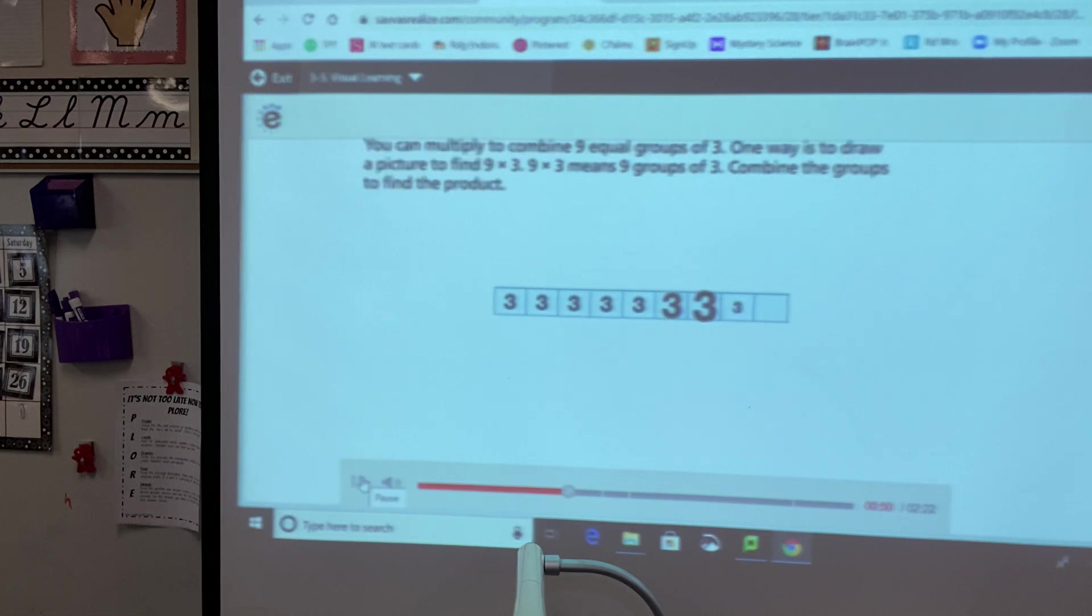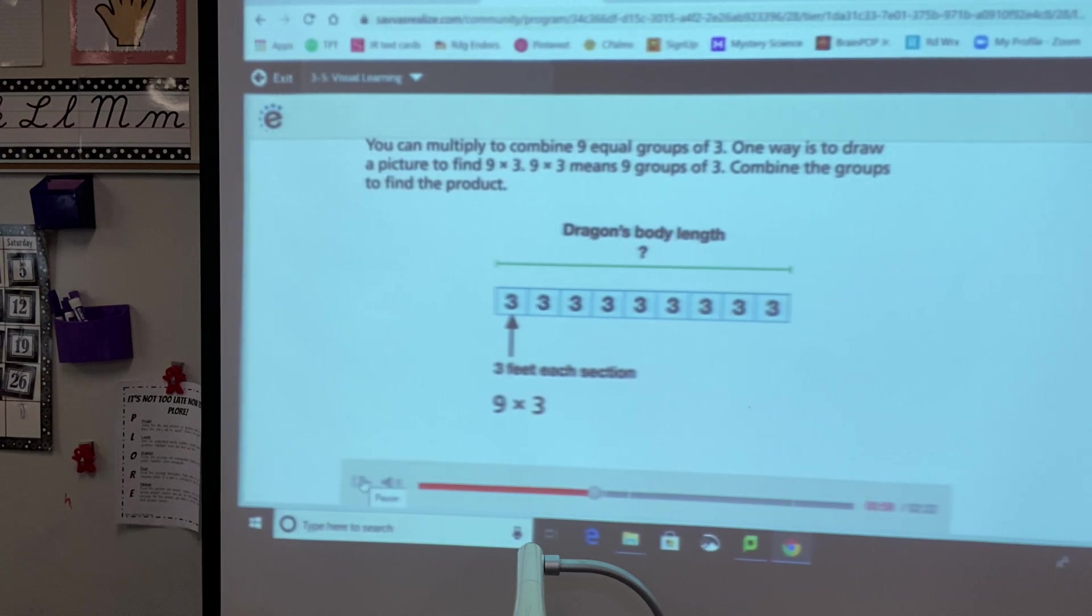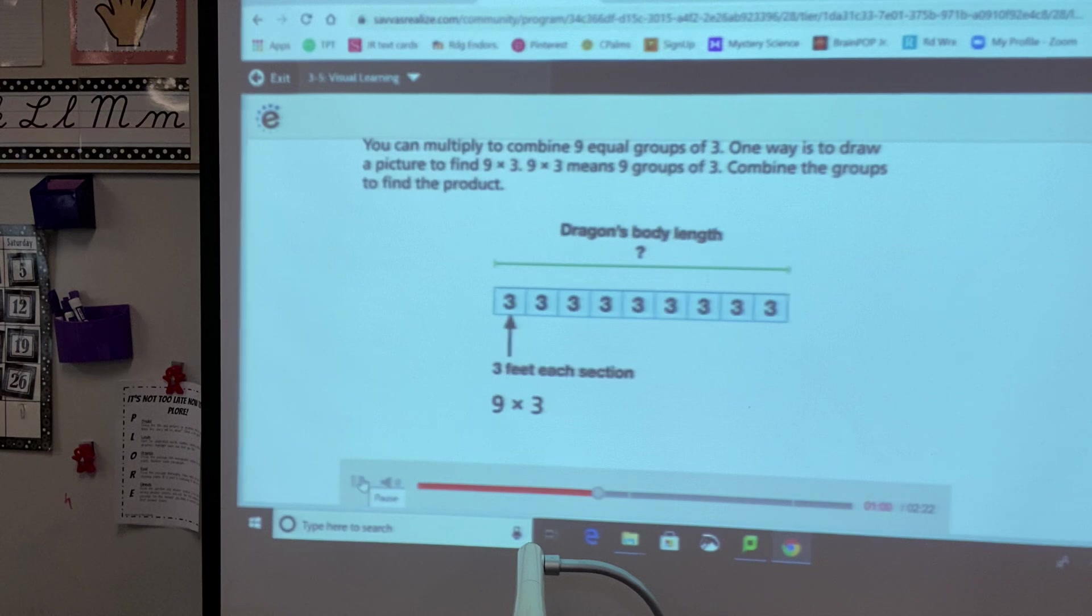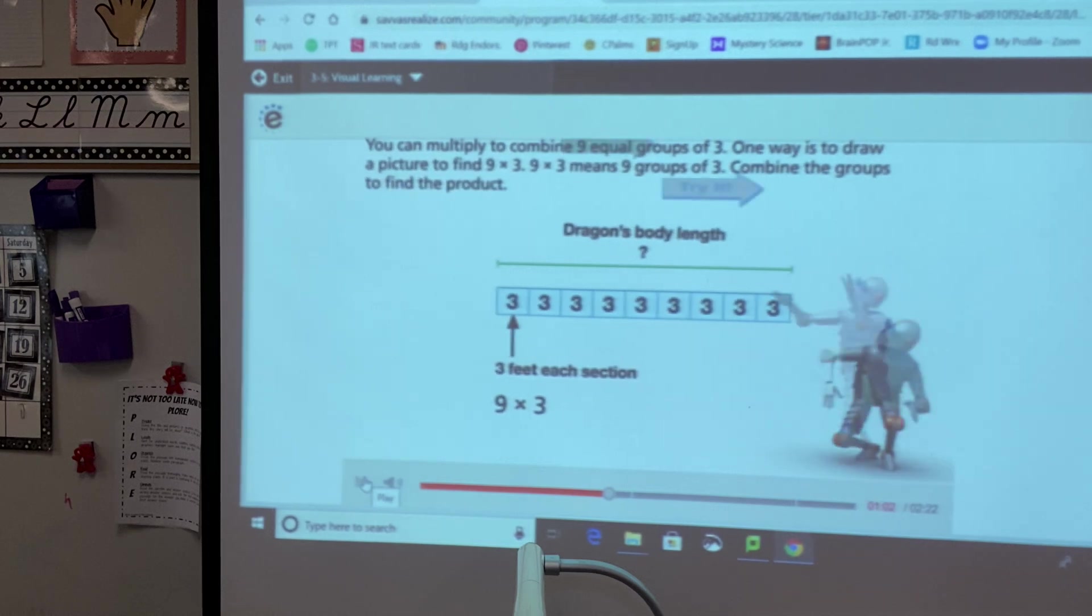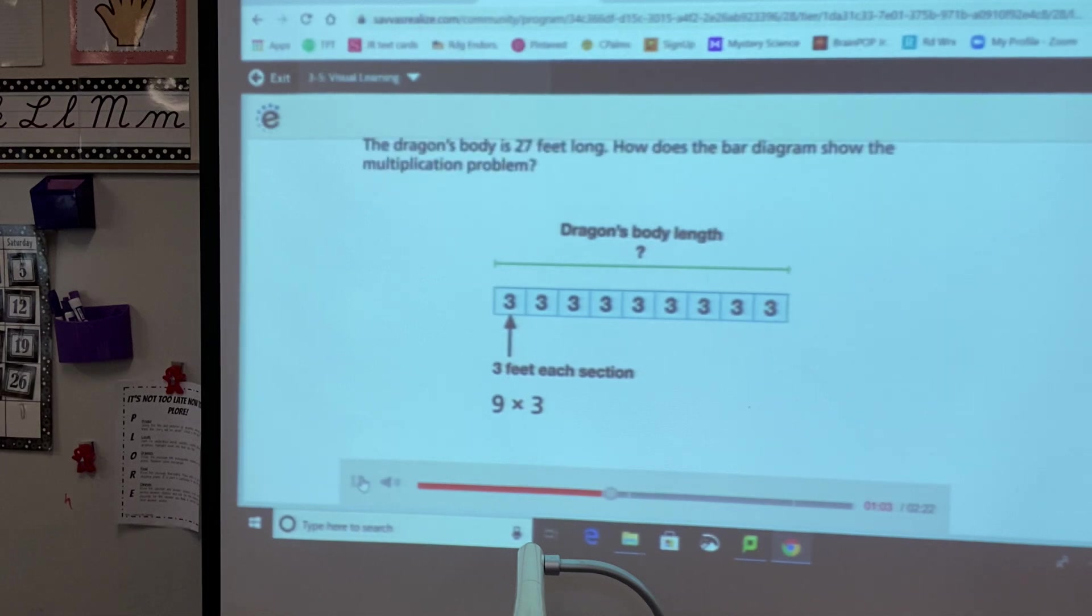One way is to draw a picture to find nine times three. Nine times three means nine groups of three. Combine the groups to find the product. The dragon's body is twenty-seven feet long.